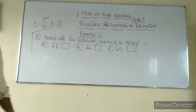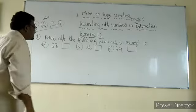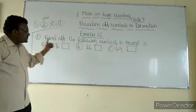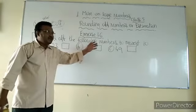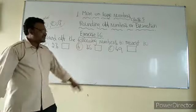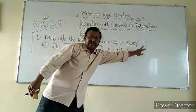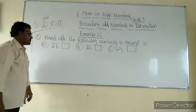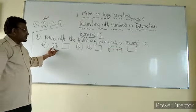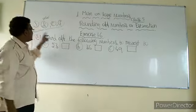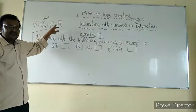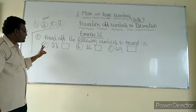Observe here in Exercise 1.6. The first line says: round up the following numbers to the nearest tens. So the questions given are A, B, C, D, E, and F. D, E, F you have to do as homework.